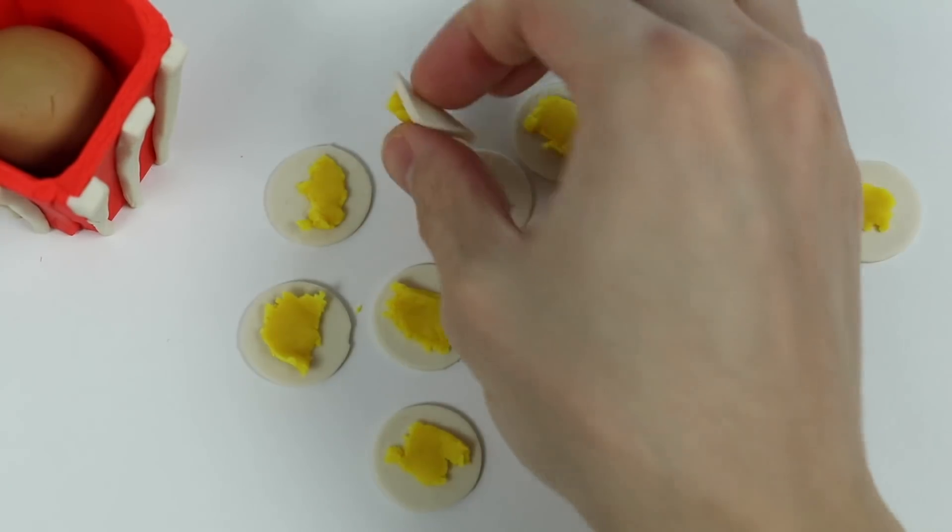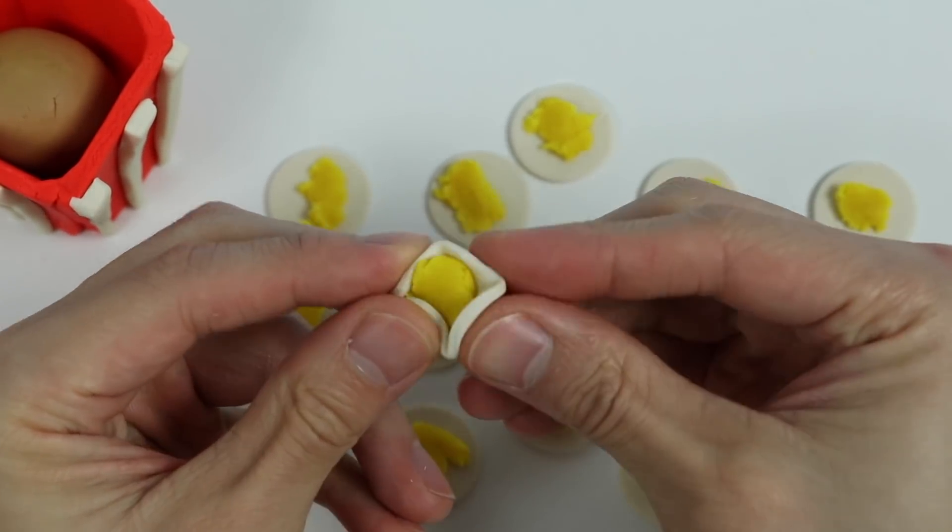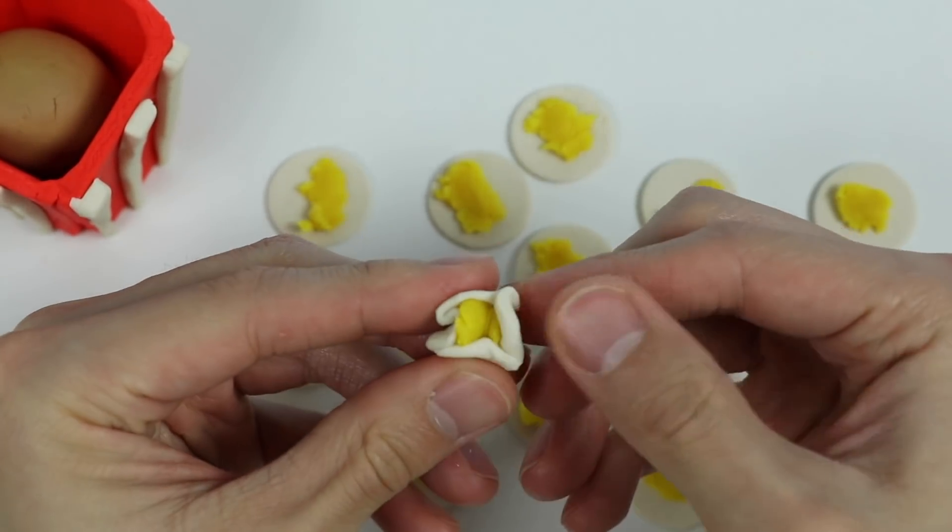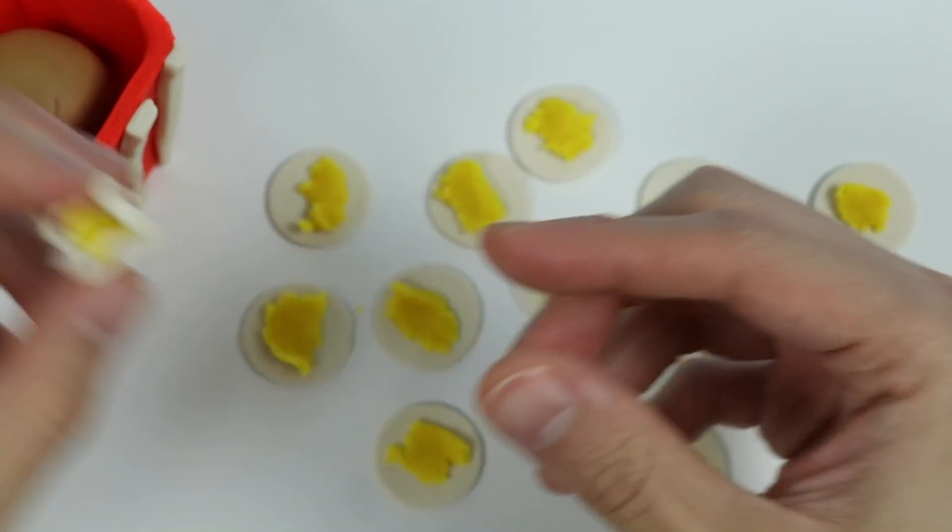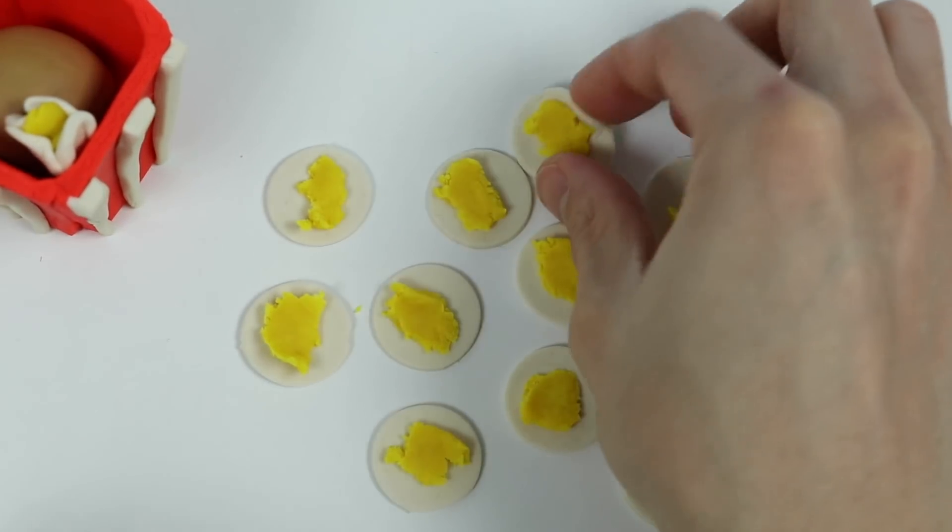Now we have to make our popcorn shape. Just scrunch it up like this. Awesome! Here's a closer look at our Play-Doh popcorn. Let's put that in the bucket. Now let's make the rest.